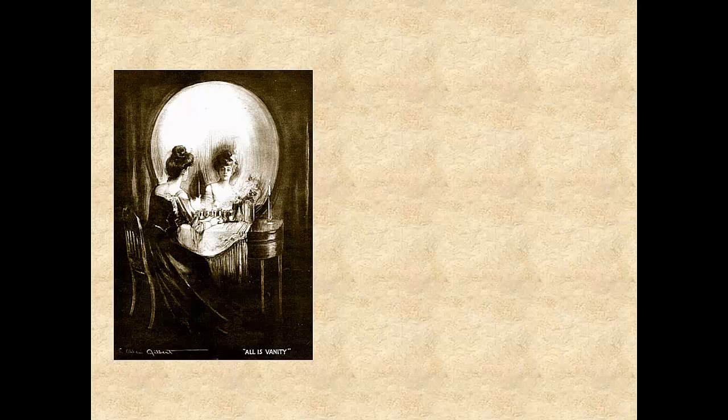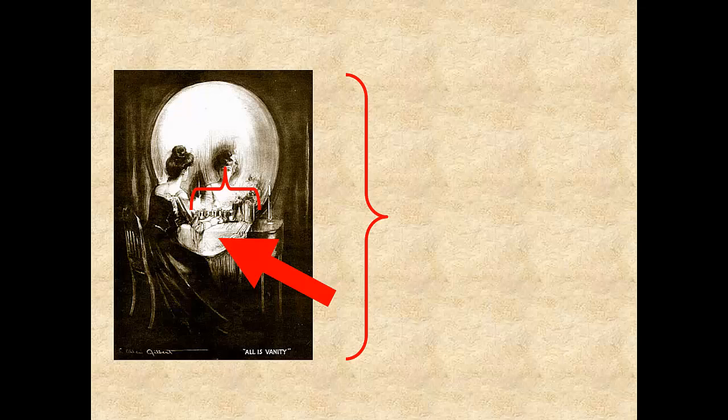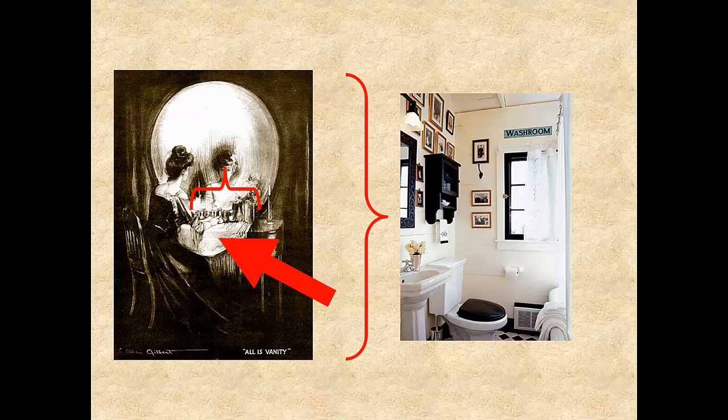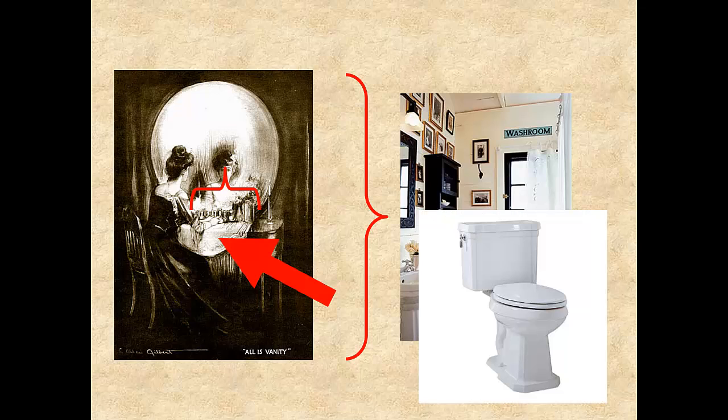For example, the word 'toilet.' The original word referred to the cloth cover of a dressing table. Then all of the items that were used in dressing. Then the dressing room itself. Then the lavatory and washroom. And now the commode itself.